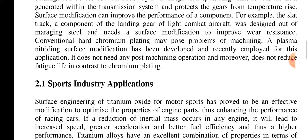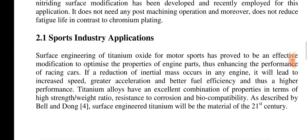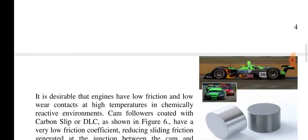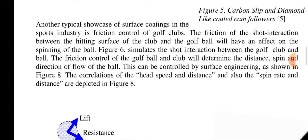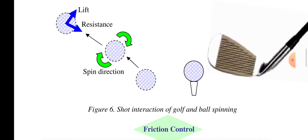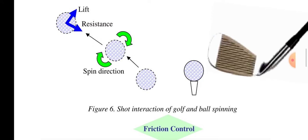The sports industry application is also important. If the reduction of inertial mass occurs in the engine, it leads to increased sport speed, greater acceleration, better fuel efficiency, and higher performance. It is desirable that engines have low friction, low wear contacts, and high temperature in chemically reactive environments. Cam followers coated with carbon slip are one such example. For golf, spin interaction of the ball — spinning and friction control — determines spin direction.